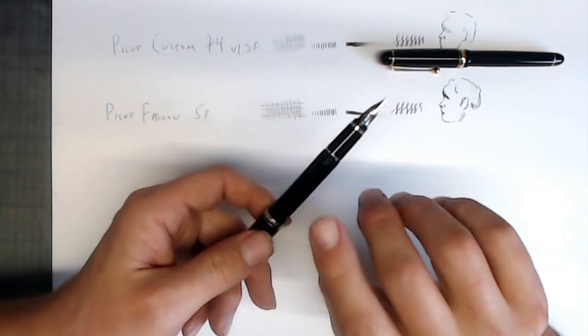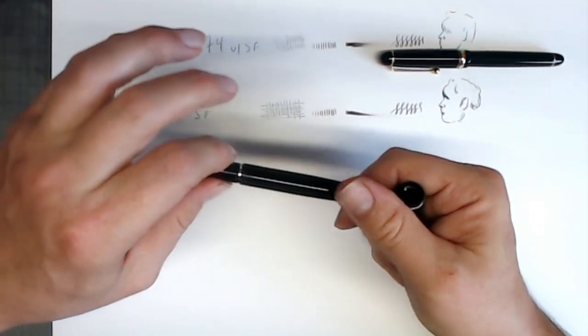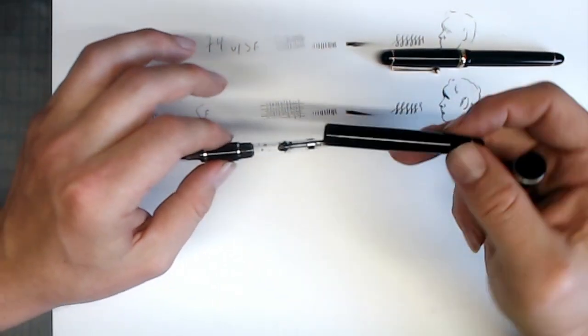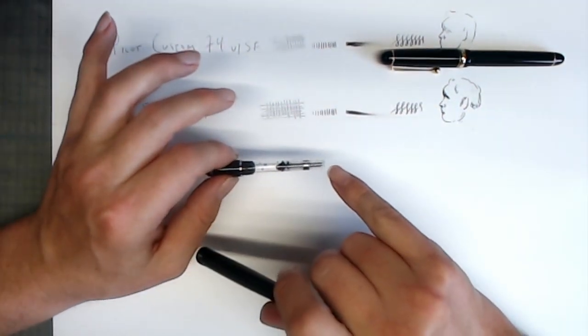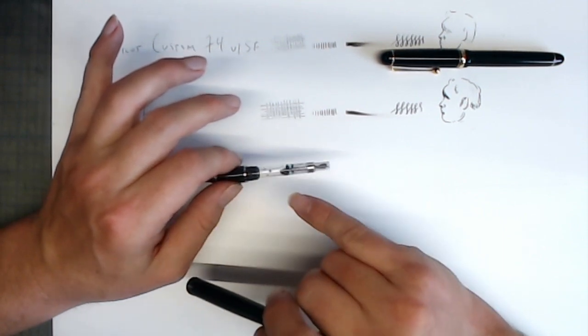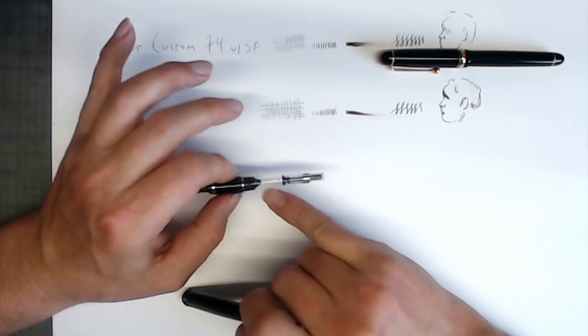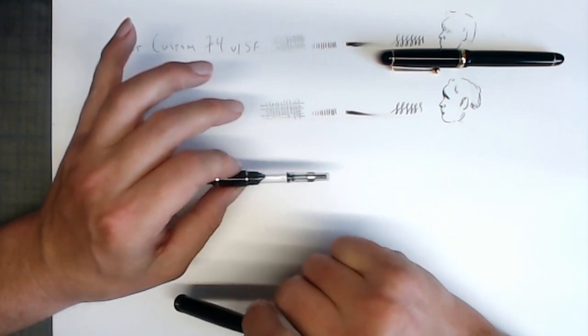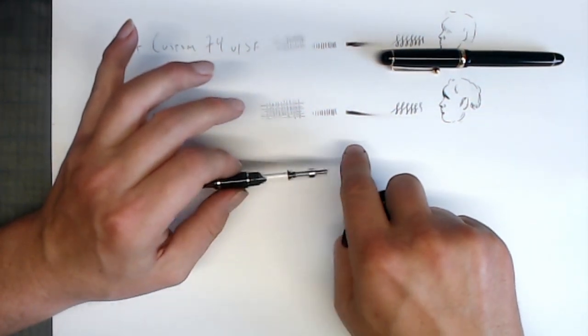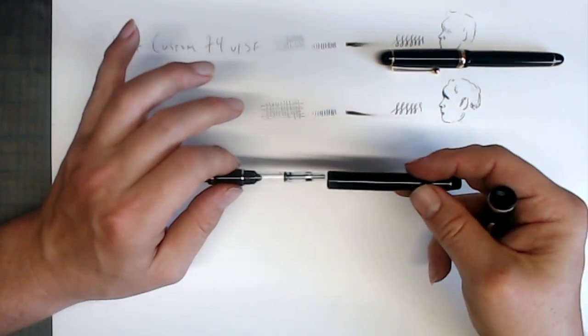The only drawback with this pen, and this is something I've discussed in other videos, but it bears repeating. This pen, and I don't know why, because if it's the same length, it should be able to accommodate the larger converter, but it doesn't. So it can only accommodate Pilot's somewhat inferior CON40 converter. Inferior because it has a lot less ink capacity. So this thing usually only fills maybe half of the way up. And when you're using flex pens, particularly this is a wetter writer, you tend to go through your inks fairly quickly. I would say that's the only drawback.